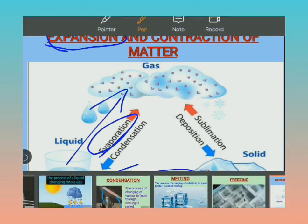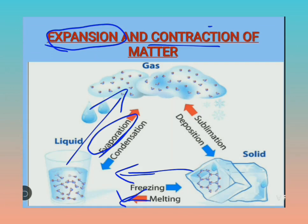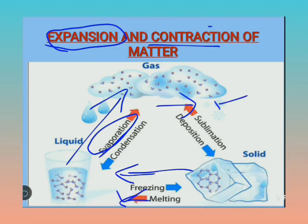Then we come to contraction. Contraction mein kya hota hai — jo rest of the two processes the, unme temperature cool down ho raha tha. Jab bhi hum kisi bhi matter ko cool down karte hain, jo molecular movement hai woh decrease hone lagta hai, intermolecular space kam hone lagta hai, jis wajah se particles ek doosre ke close aa jaate hain. As the molecules come closer, intermolecular force of attraction increase ho jaata hai aur matter ka size decrease hone lagta hai — matter ka size chota ho jaata hai cooling ke baad. So this decrease in size on cooling is called contraction.